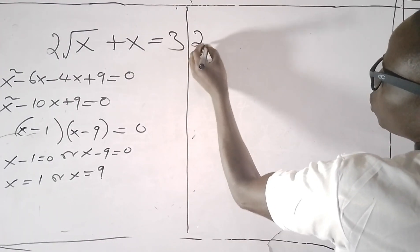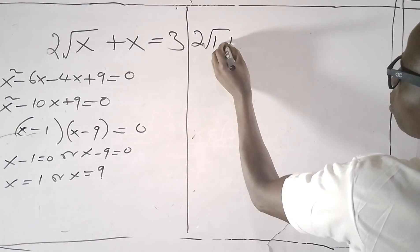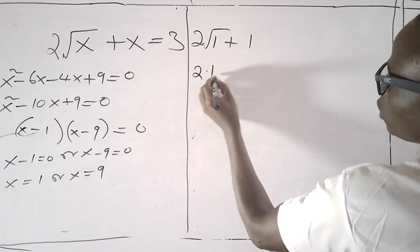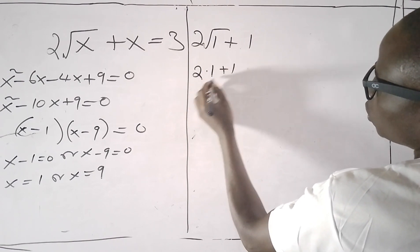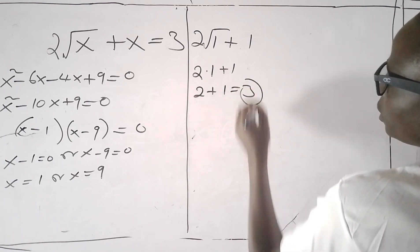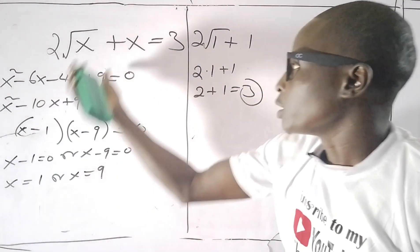I have 2√1 plus 1. So 2 times 1 is 2, plus 1 which is actually 3. We can see that 1 satisfied the equation.